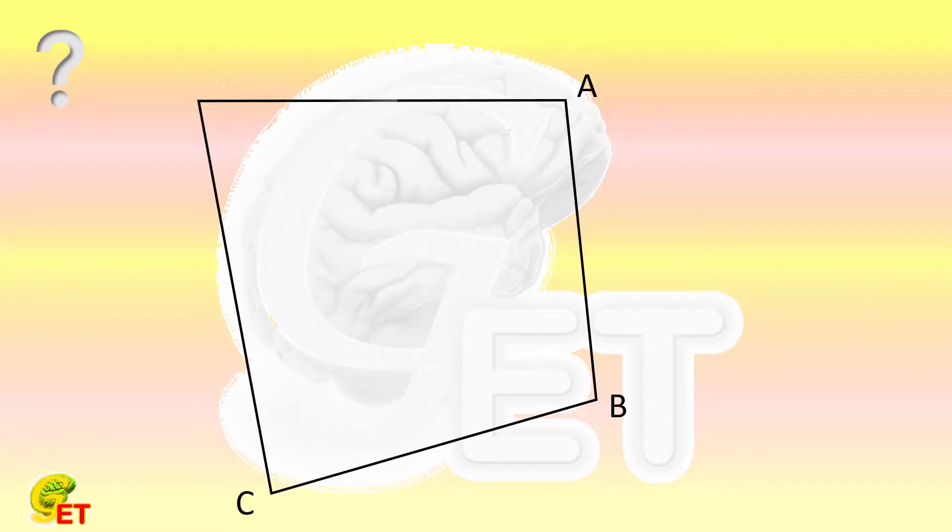There is a quadrilateral ABCD which intersects a circle at 8 points, dividing the circle into 8 arcs: 4 inside the quadrilateral and 4 outside.